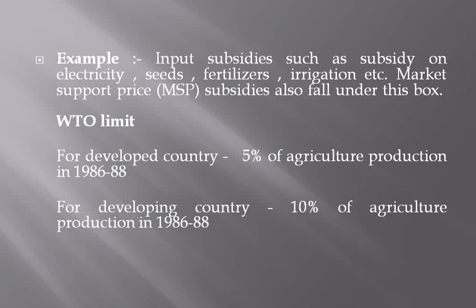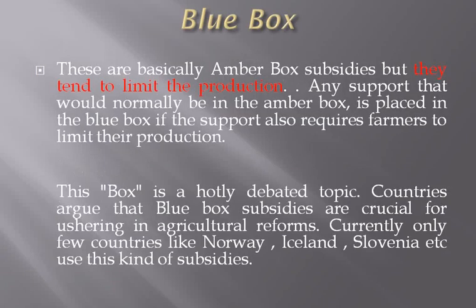Blue box subsidies are basically amber box subsidies but they tend to limit production — whereas amber box tends to raise production, blue box tends to limit it. Any support that would normally be in the amber box is placed in the blue box if the support also requires farmers to limit their production. This box is a hotly debated topic.